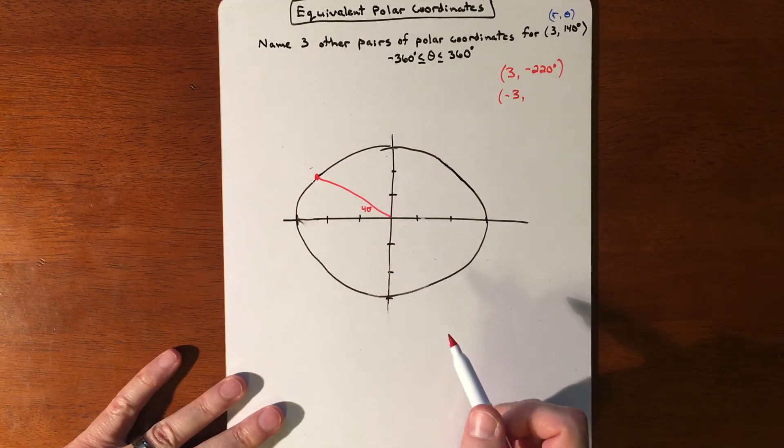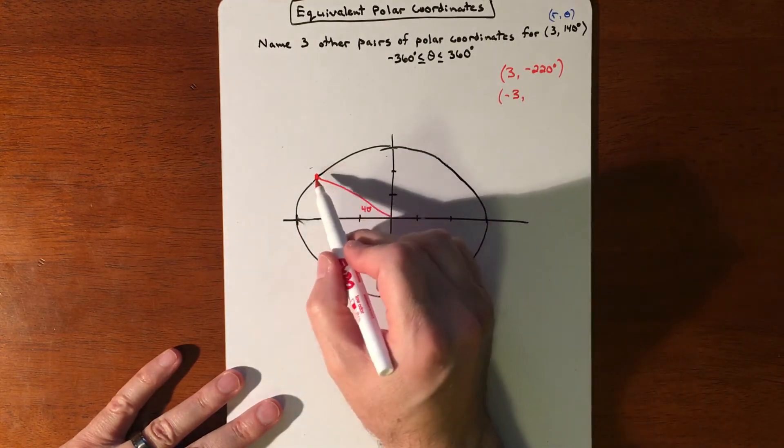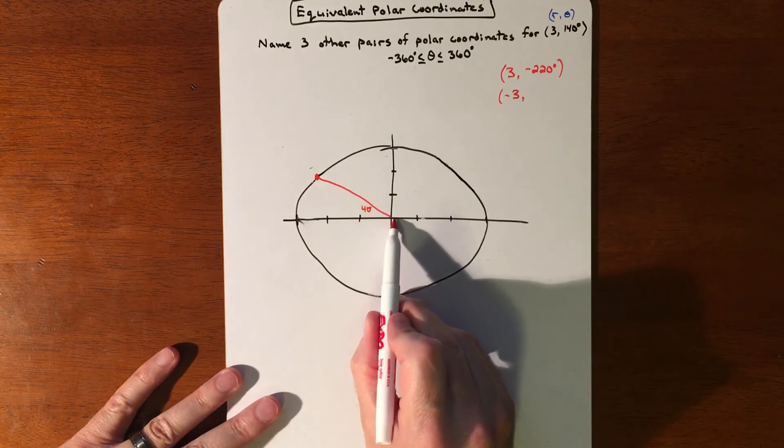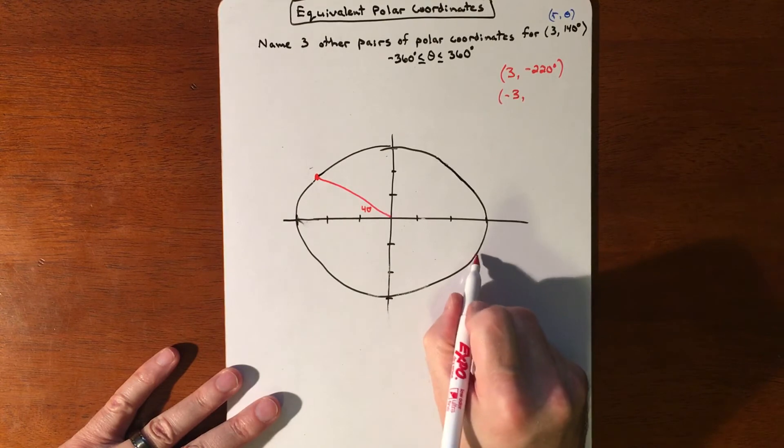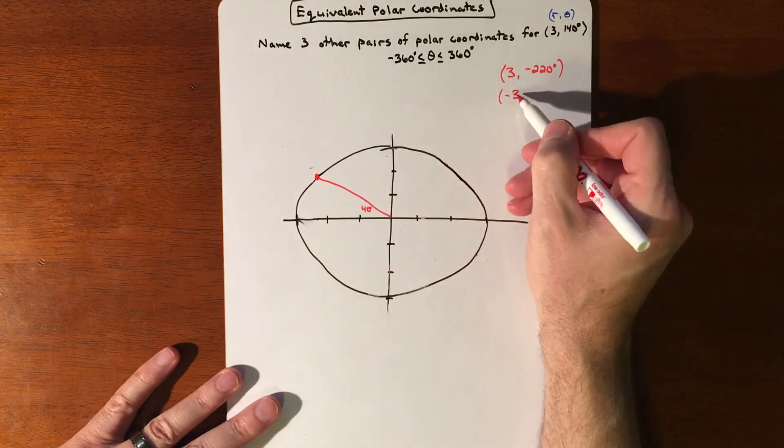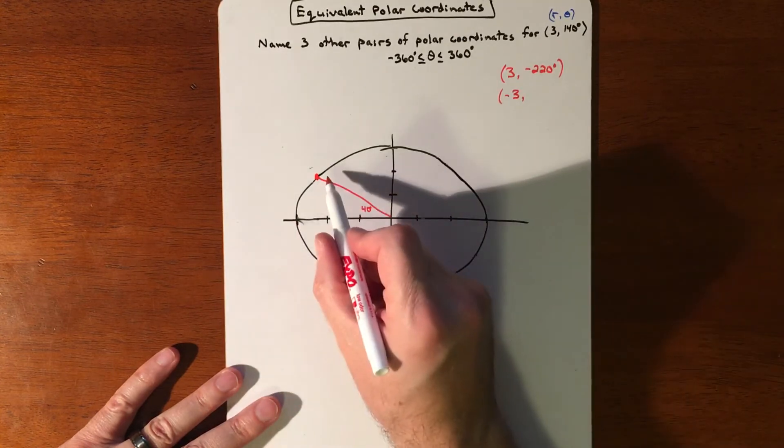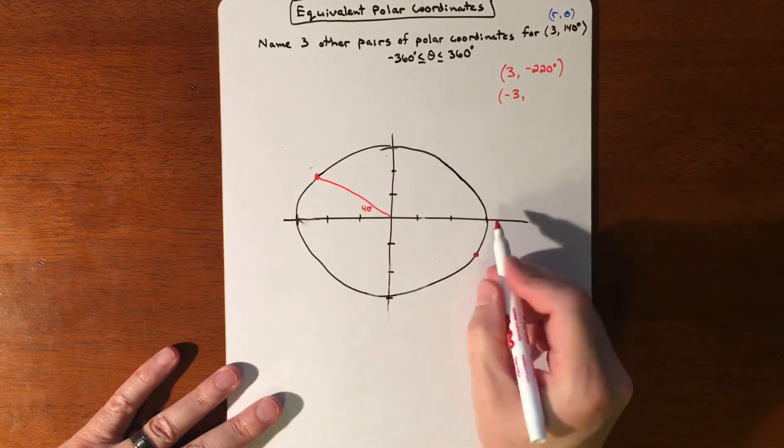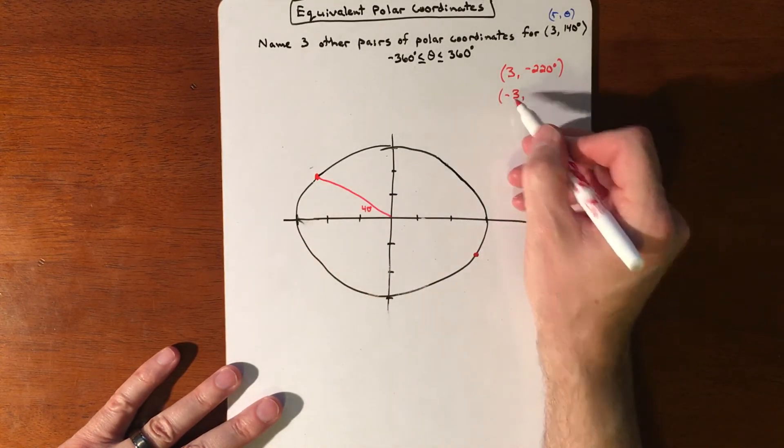So basically you're going to be 40 degrees shy of 360. Another way to think of this is this point here and then reflect it over because of the negative. If it's easier to do that, then starting with the negative 3 and then moving around, some people might be a lot more comfortable with thinking of our point being reflected. So that's what the negative is going to do.